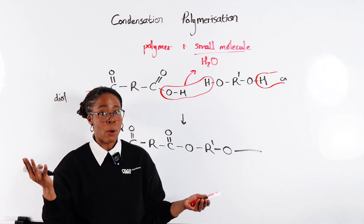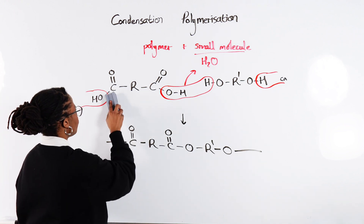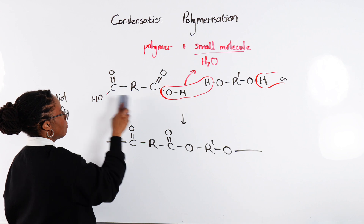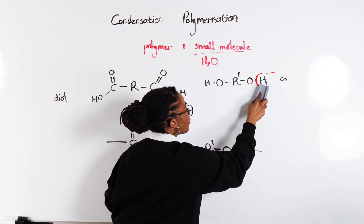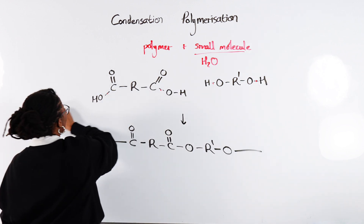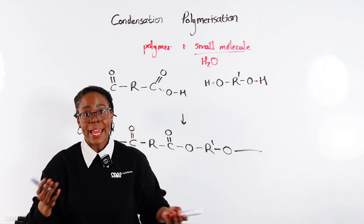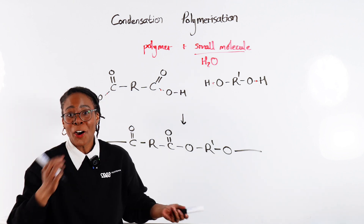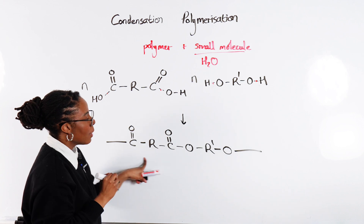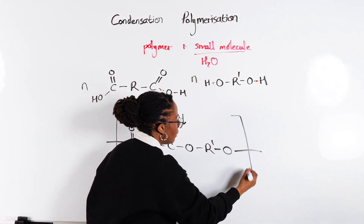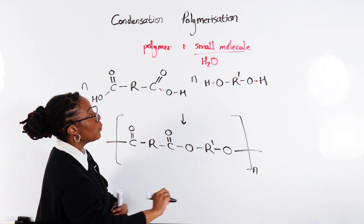If we were to write this as an equation we would have to represent our waters, include those, and show how many water molecules we are losing as we're producing our polymer. We don't usually put specific numbers to it — instead we just say n, where n is the number of monomers. So if we've got n of our dicarboxylic acid and n of our diol, then the polymer chain length is going to be n, because you need one of each to make your polymer.